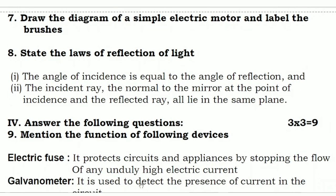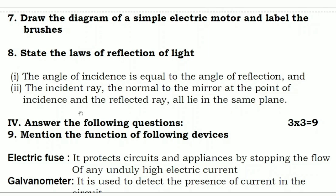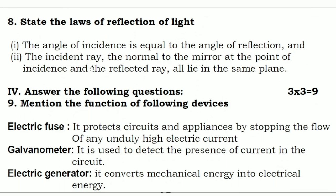Seventh question: draw the diagram of a simple electric motor and label the brushes. I have explained this in the passing package as well. Diagrams carry 16 marks across Physics, Chemistry, and Biology, so you must concentrate on diagrams and also on labeling the parts — the parts are very important. Here they asked for the electric motor and to label the brushes; I have given the figure so you have to learn it.